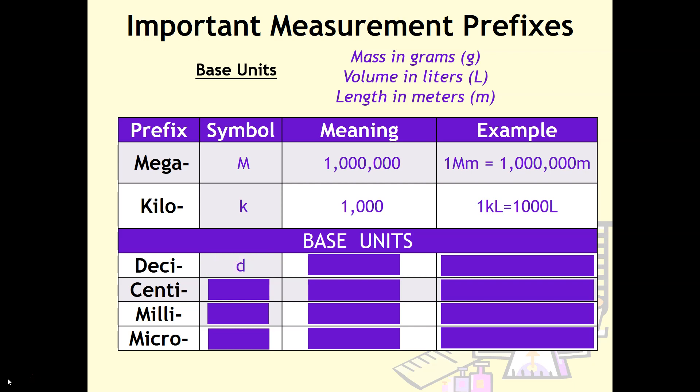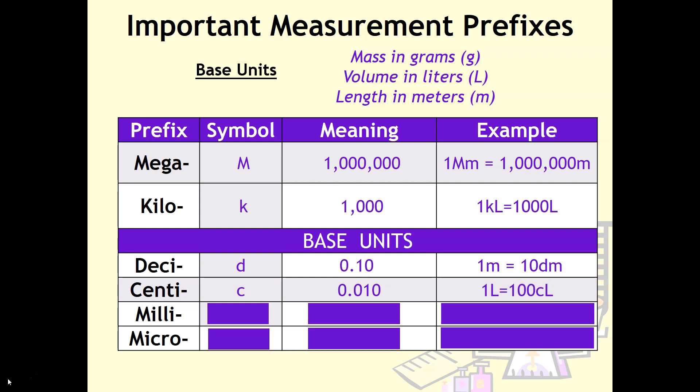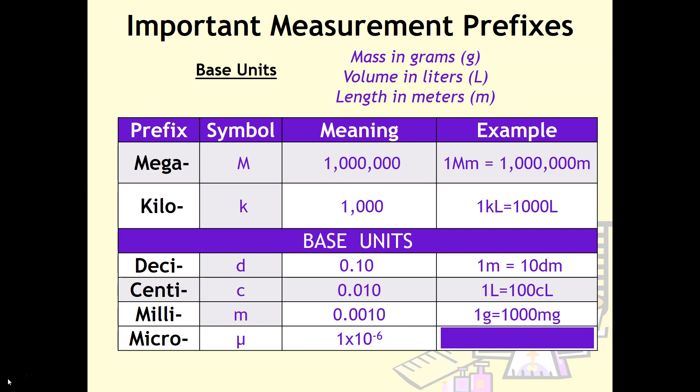Then we have deci, with the symbol lowercase d, meaning tenth. I prefer to write this as one meter equals 10 decimeters. Centi is next, meaning hundredth, so one liter equals 100 centiliters. Milli means thousandth, so one gram equals 1,000 milligrams. And micro is teeny tiny, with the symbol mu that looks like a U with a hook in front. This means 1 times 10 to the minus 6, or millionths. So one meter equals 1 times 10 to the 6 micrometers.